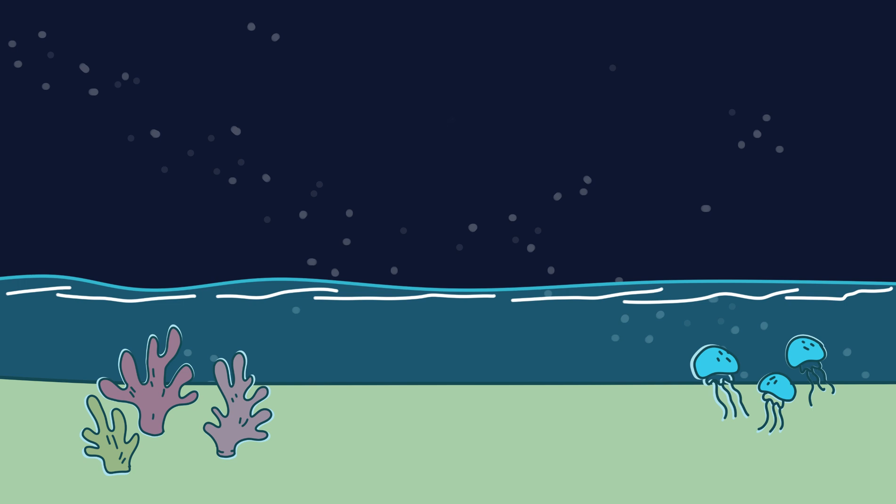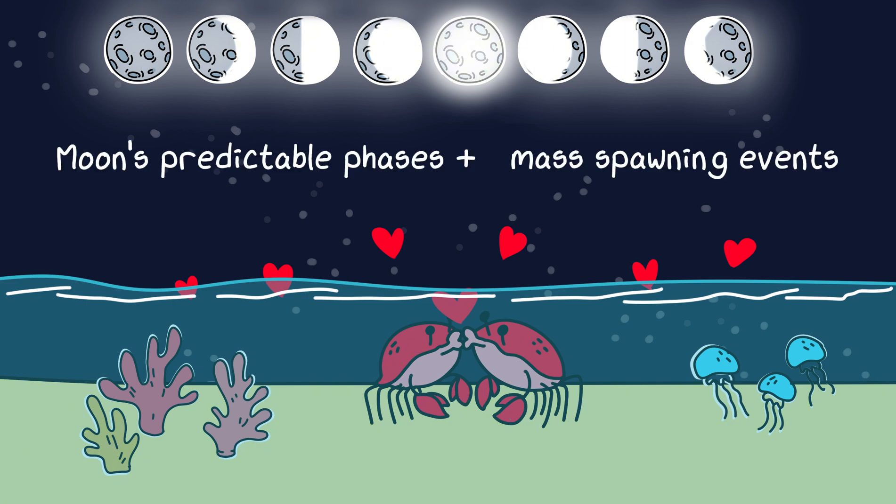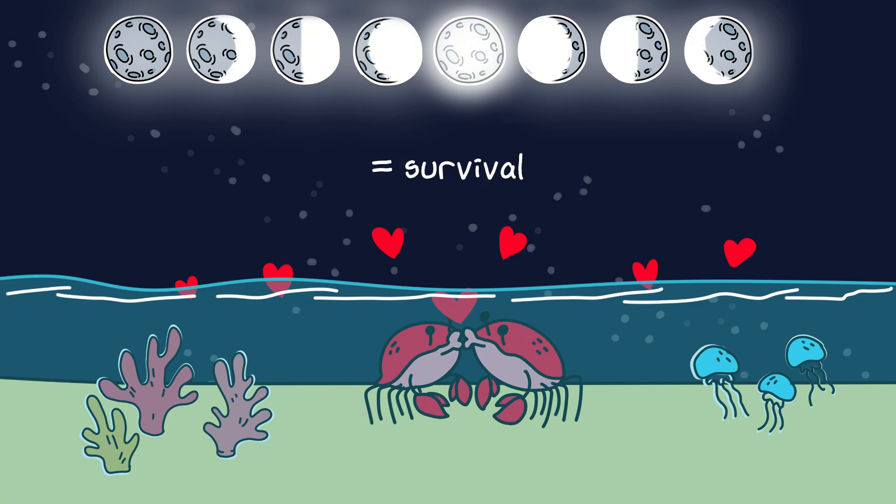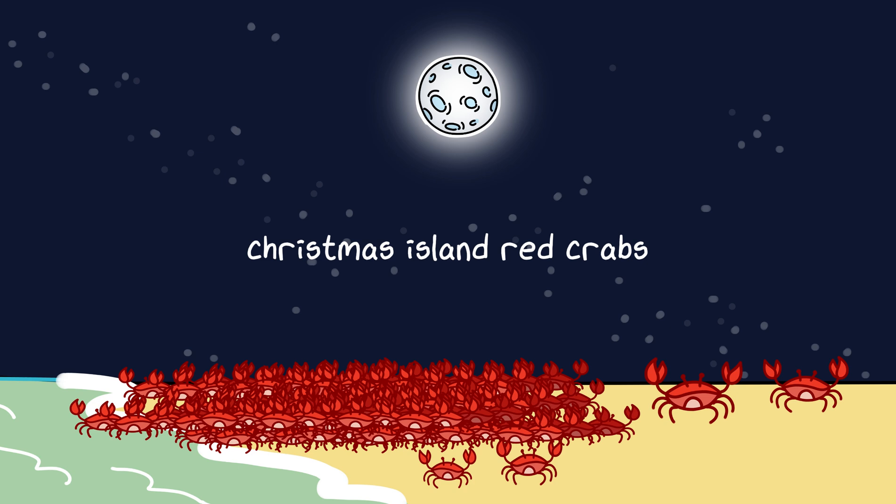It gets even crazier. Many marine creatures rely on the lunar cycle for their romantic activities or reproduction. Why? Because the moon's predictable phases help time mass spawning events to ensure survival. Take corals, for example. They spawn en masse during specific full moons. Same for Christmas Island red crabs. They migrate by the millions when the moon hits just right.